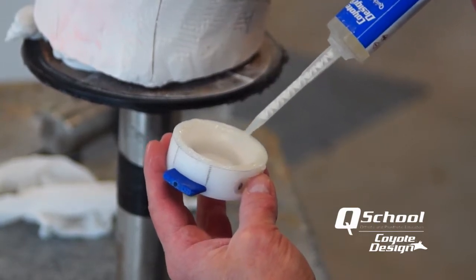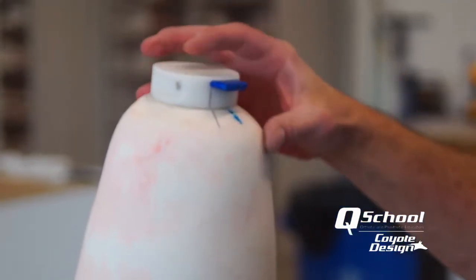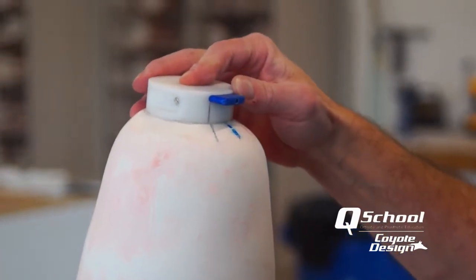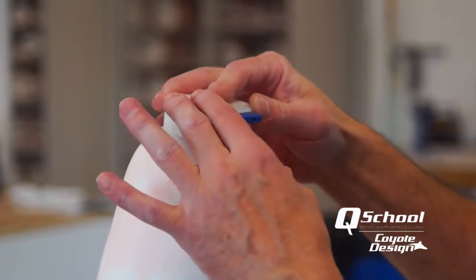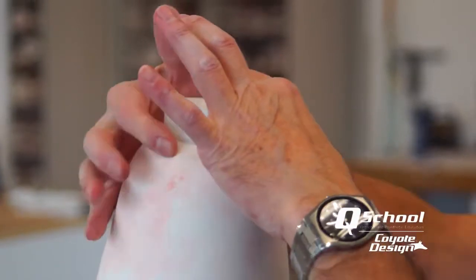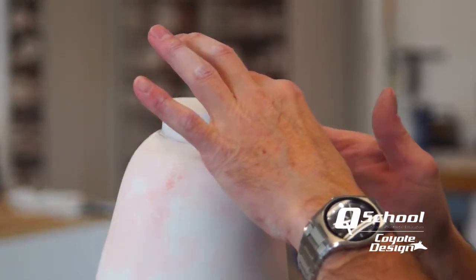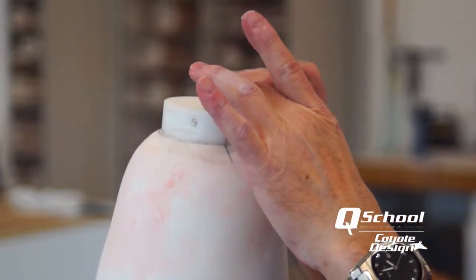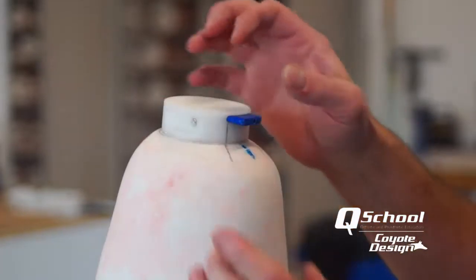We'll take our Coyote Quick and run a nice little bead right around the edge. And then set this on top of our cast. So once we set it up there, move it a little bit, get our lines all matched up. And then any excess that comes out from under the puck you want to get rid of. And if you get enough Coyote Quick on there, you will get a good bond and it should stay still through the rest of the process of plastic pulling.